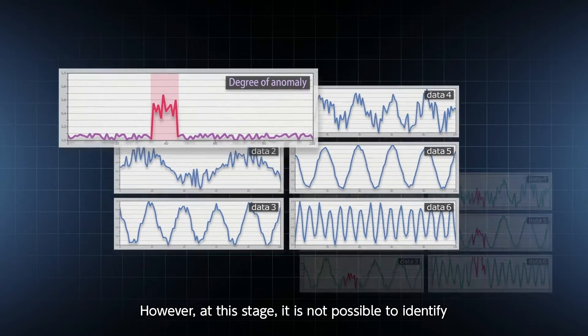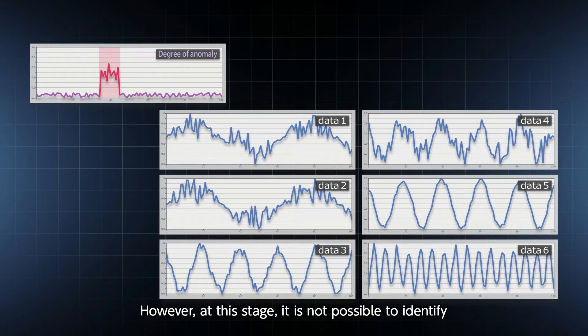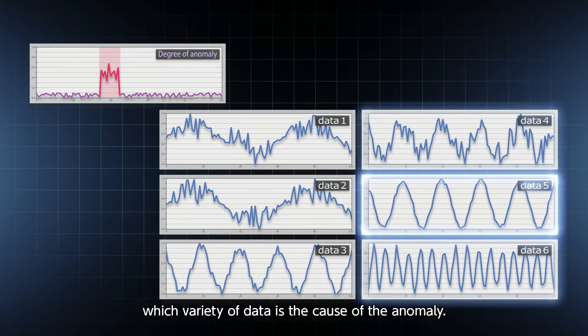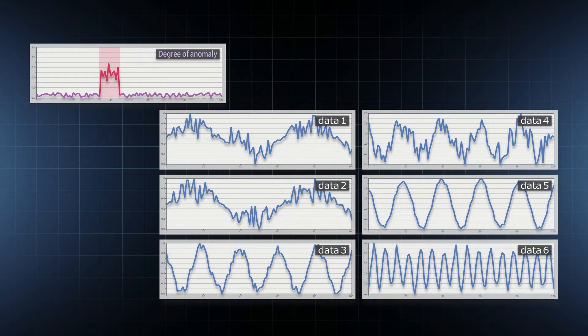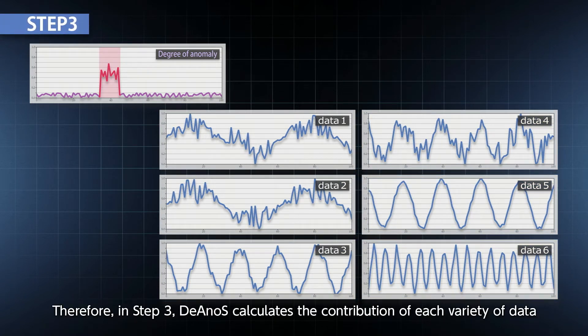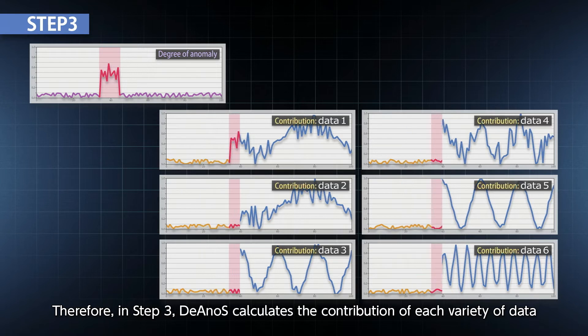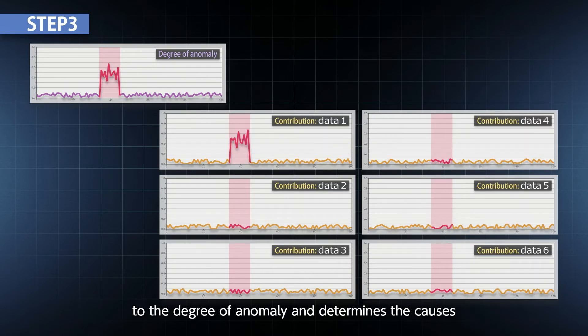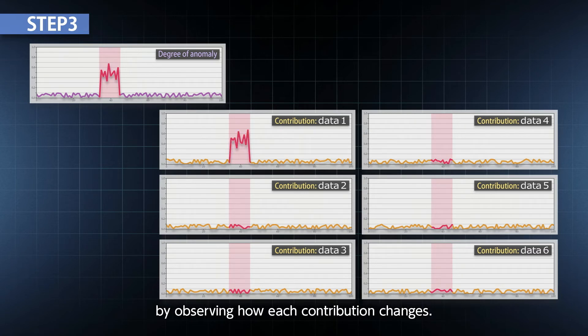However, at this stage, it is not possible to identify which variety of data is the cause of the anomaly. Therefore, in step three, DeAnoS calculates the contribution of each variety of data to the degree of anomaly and determines the causes by observing how each contribution changes.